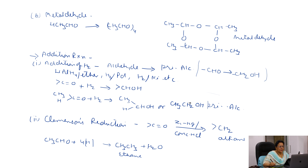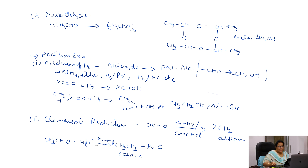The next important reduction is Clemmensen's reduction. In this reaction, the carbonyl CO group is reduced to CH2 in the presence of amalgamated zinc and concentrated HCl. When acetaldehyde is reduced by amalgamated zinc, it gives an alkane.